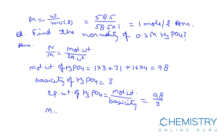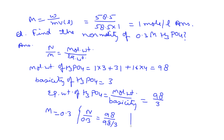Molarity is 0.3. Putting these values into the formula: N/0.3 = 98 / (98/3). So N = 0.3 × 3 = 0.9 gram equivalents per litre. This is our answer.